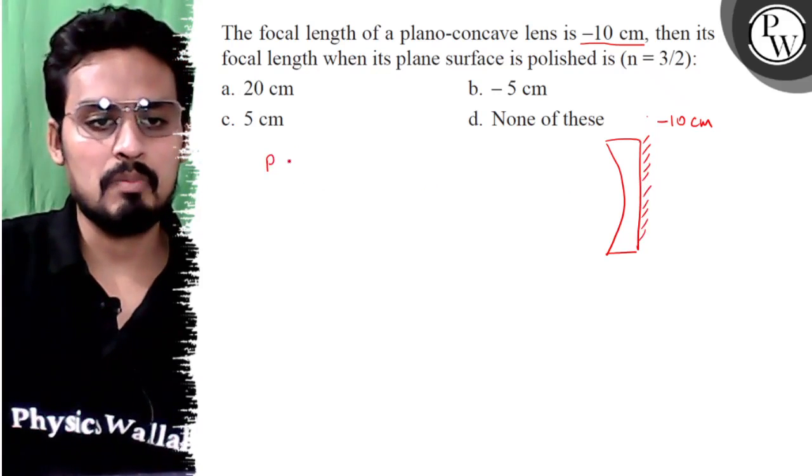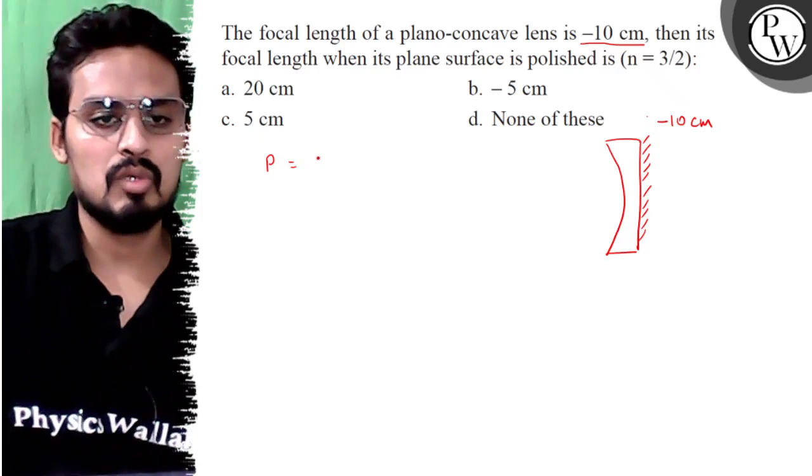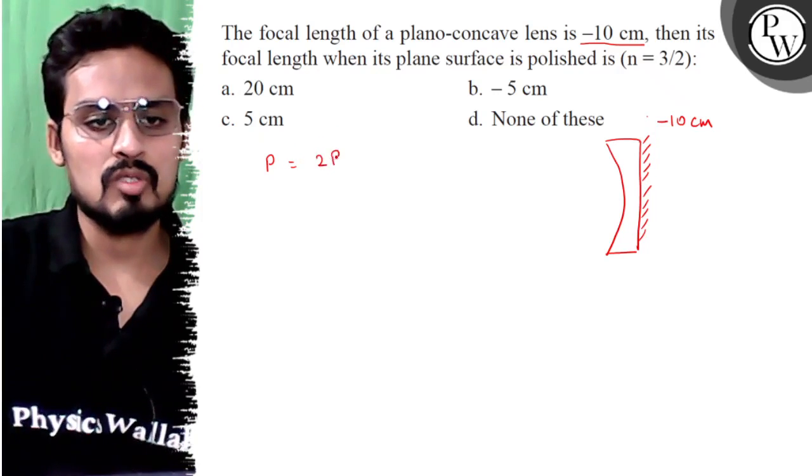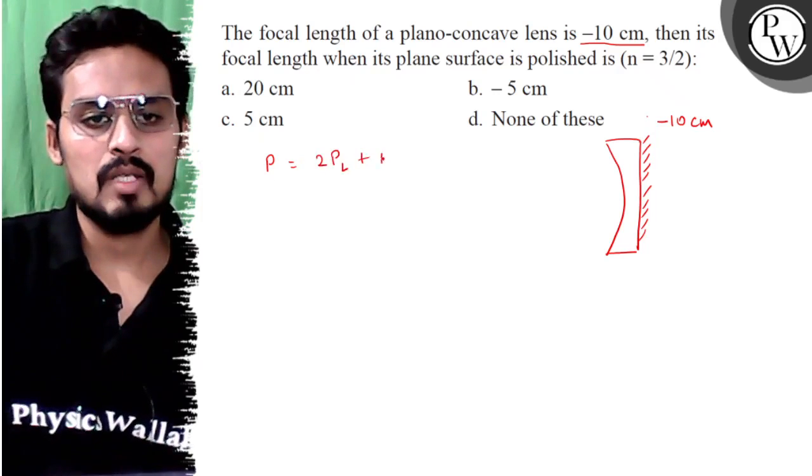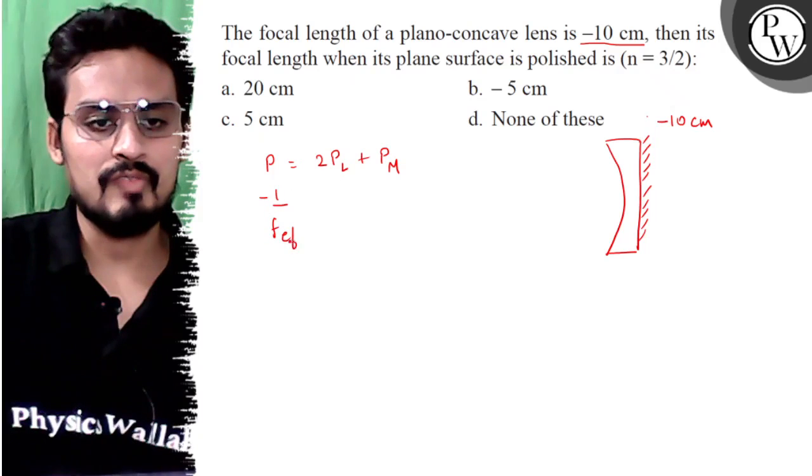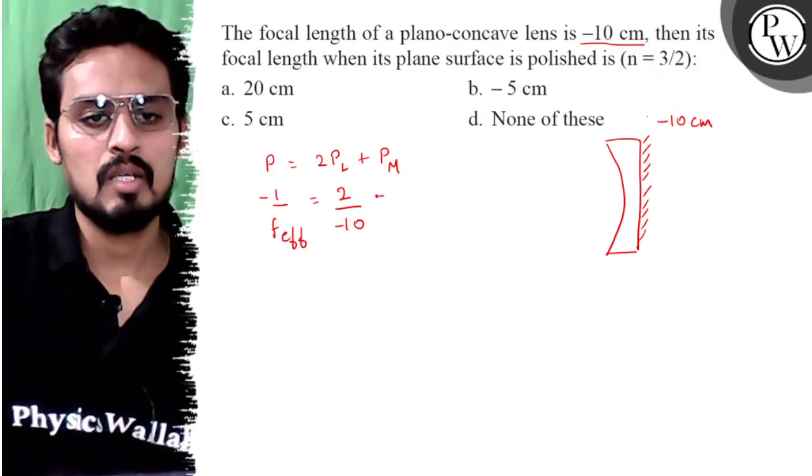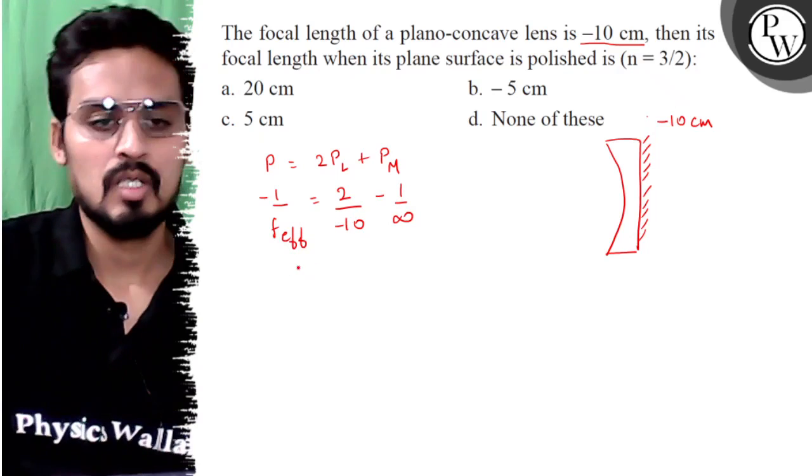We know that the power is effective. The silvered lens will be 2 times the power of lens plus the power of mirror. We know that 1 by f effective is equal to 2 upon focal length of lens, which is minus 10, minus 1 upon focal length of mirror, which is infinity.